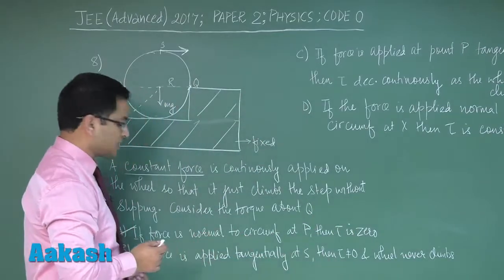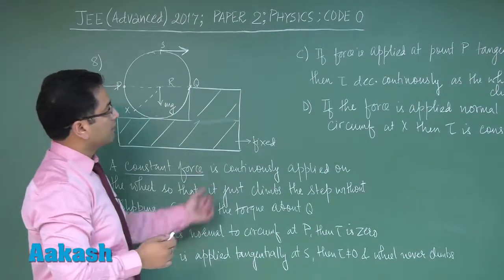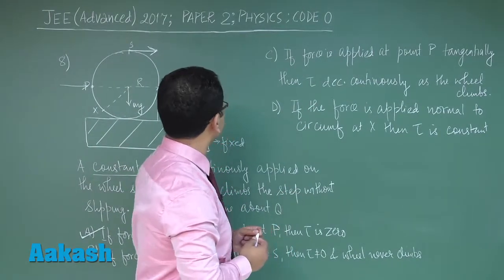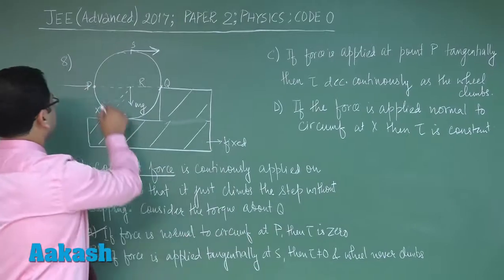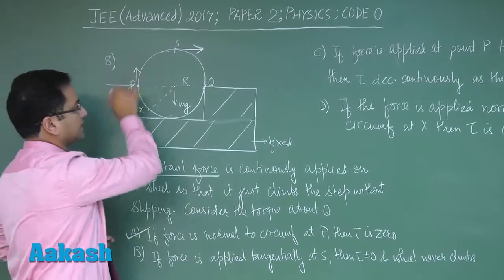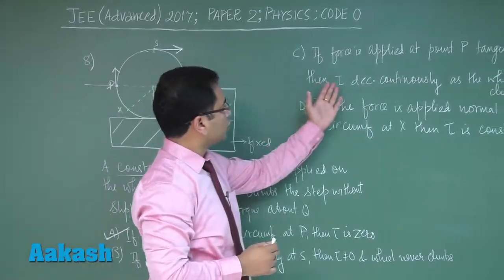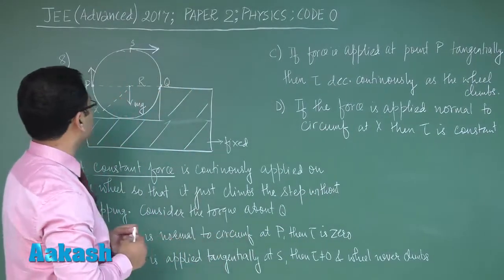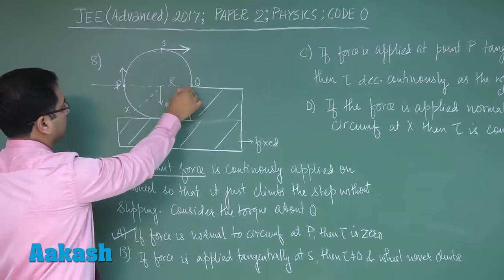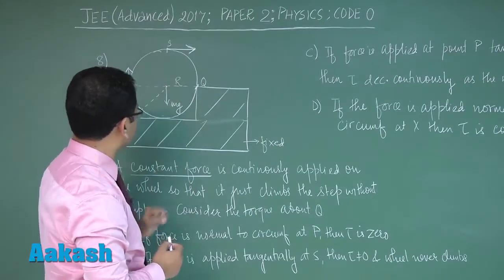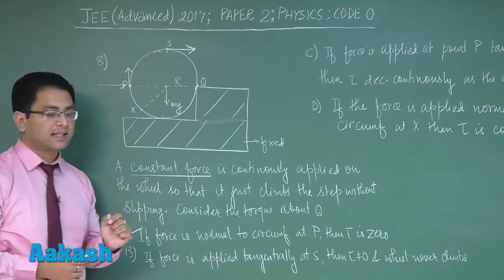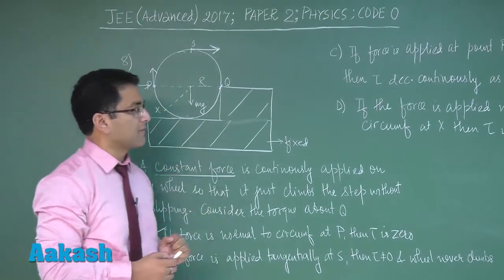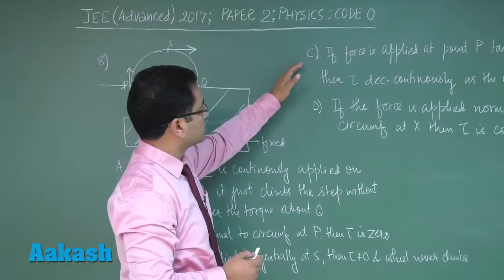Now let's go with option number C. If the force is applied at point P tangentially, something like this, the torque decreases continuously as the wheel climbs. That would not be the case, because the torque would be constant because the perpendicular distance would be constant. But yes, we have already said under the condition that we have taken the force of constant magnitude. So in this case, option number C would be incorrect.